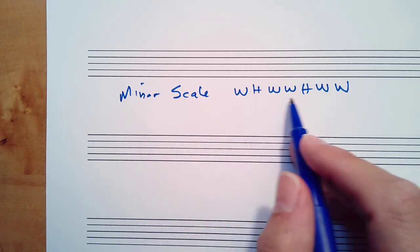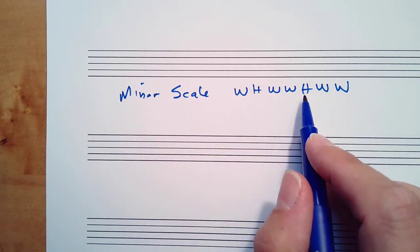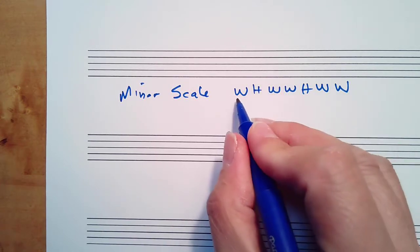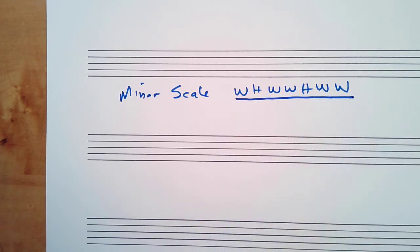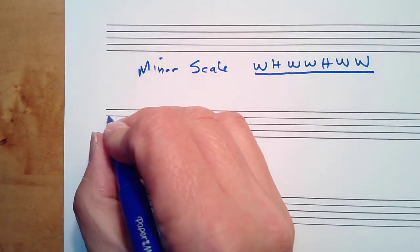Minor scale has a different pattern: whole, half, whole, whole, half, whole, whole. That's another thing you need to memorize. I'll show you how we can get that very easily if you don't remember it.